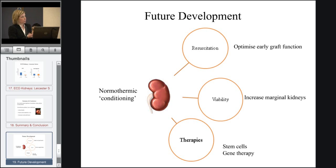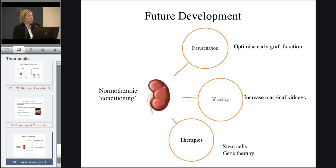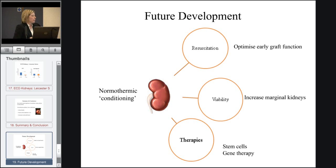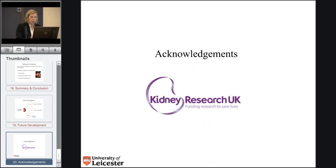Lastly, I just wanted to highlight the broader ability of this technique. Not only can it resuscitate and condition the organ, but in the future it might be used to determine viability — to actually test the organ before we transplant it. This could lead to more of these marginal kidneys being used. We could also possibly introduce therapies into the kidney to improve its condition further, such as stem cells or gene therapy. I'd like to thank Kidney Research UK for supporting the clinical application of this study. Thank you.